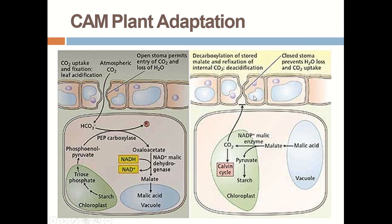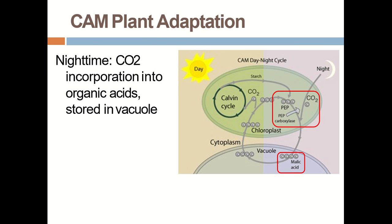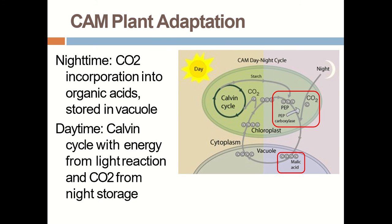Stomata close during the day in CAM plants. Malic acid stored in the vacuole is converted into malate, which comes into the chloroplast where it is converted into CO2 and pyruvate. CO2 enters the Calvin cycle and is involved in glucose or sugar formation. At night, CO2 is incorporated into organic acids like malate and malic acid, stored in the vacuole, and in the daytime malic acid is converted to malate, which releases CO2 into the Calvin cycle for sugar formation.